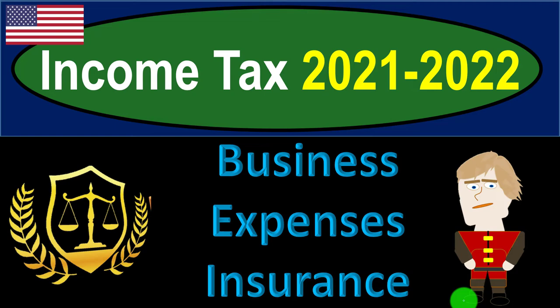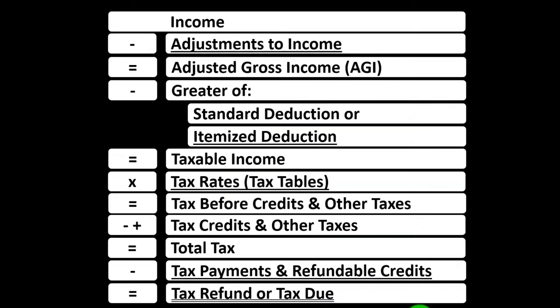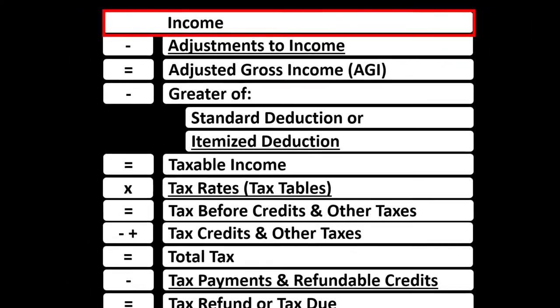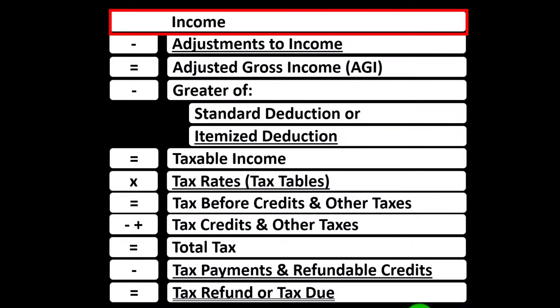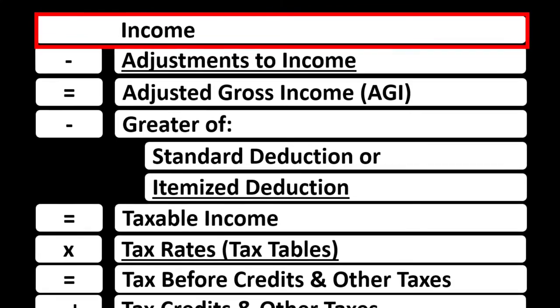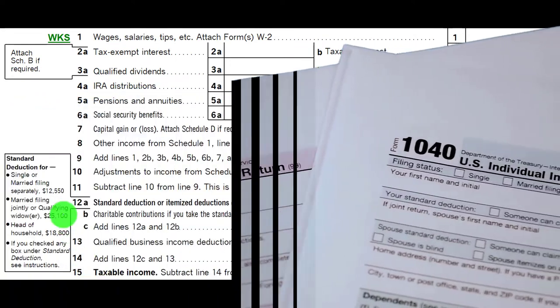Income Tax 2021-2022: Business Expenses - Insurance. Get ready to maximize your refunds. Most of this information can be found in Publication 334, Tax Guide for Small Business, Tax Year 2021. Line 1 Income would be supplemented with another schedule — basically an income statement which has income and expenses. We're focused on the expenses, which are basically deductions, with the net rolling into Line 1 Income of the Income Tax Formula and Form 1040 page 1.